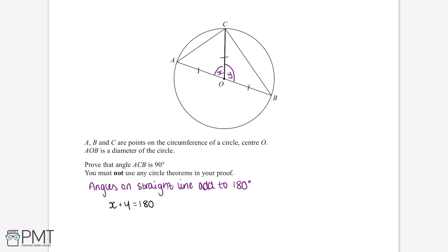If we want to prove that angle ACB, which is this one here, is 90 degrees, we'll need to work out what angle CAB is and what angle ABC is. We can do this in terms of X and Y.